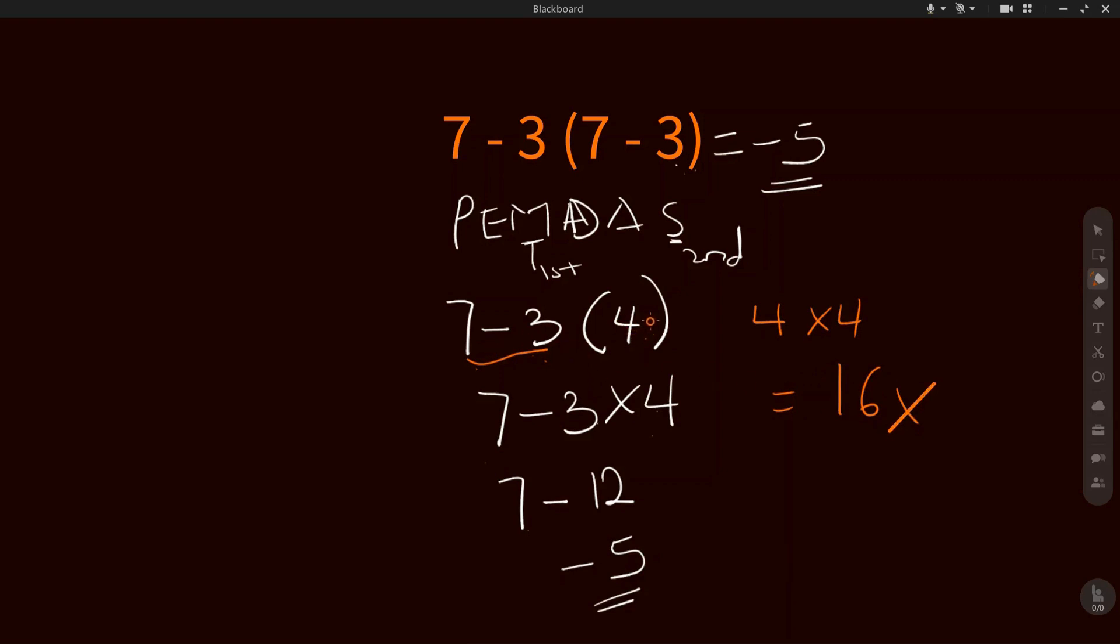Because after we simplified what we have in the bracket and it gave 4, we'll be having 7 minus 3 times 4. So you don't say 7 minus 3 before multiplying by 4. We have to multiply, like we have in the rule, before we subtract, else you will get a wrong answer.